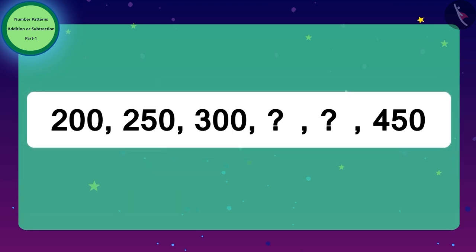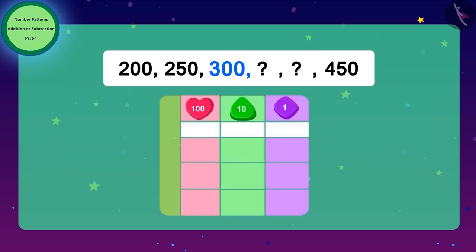To get the next number, you have to add 50 to every number. Similarly, to get the number after 300, we will have to add 50 to 300, so the next number is 350. Now to get the next number after 350, we will have to again add 50 to 350, and we get 400.